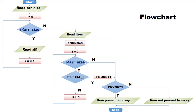If the item is not present, it exits from the normal exit of the loop, and in that case 'found' will be 0. Now we check the value of 'found'. If found equals 1, we can say that the item is present in the array. If found is not equal to 1, we can say that the item is not present in the array, and then stop.